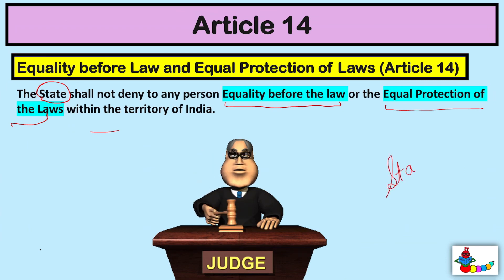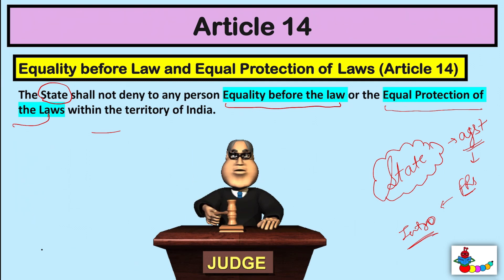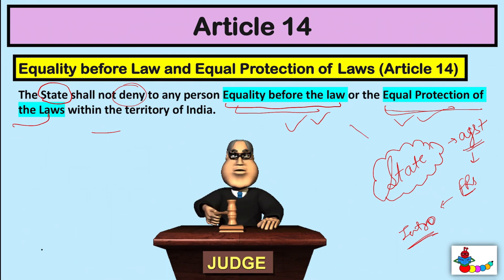All our articles and fundamental rights are against the State — this I have told you in the previous video. We can claim all rights against the State, and there are very selected rights which we claim against individual parties. The State cannot deny any person these two things. In this entire video, we will explain these two things: equality before law, and equal protection of laws, and at the end we will study the difference between them.